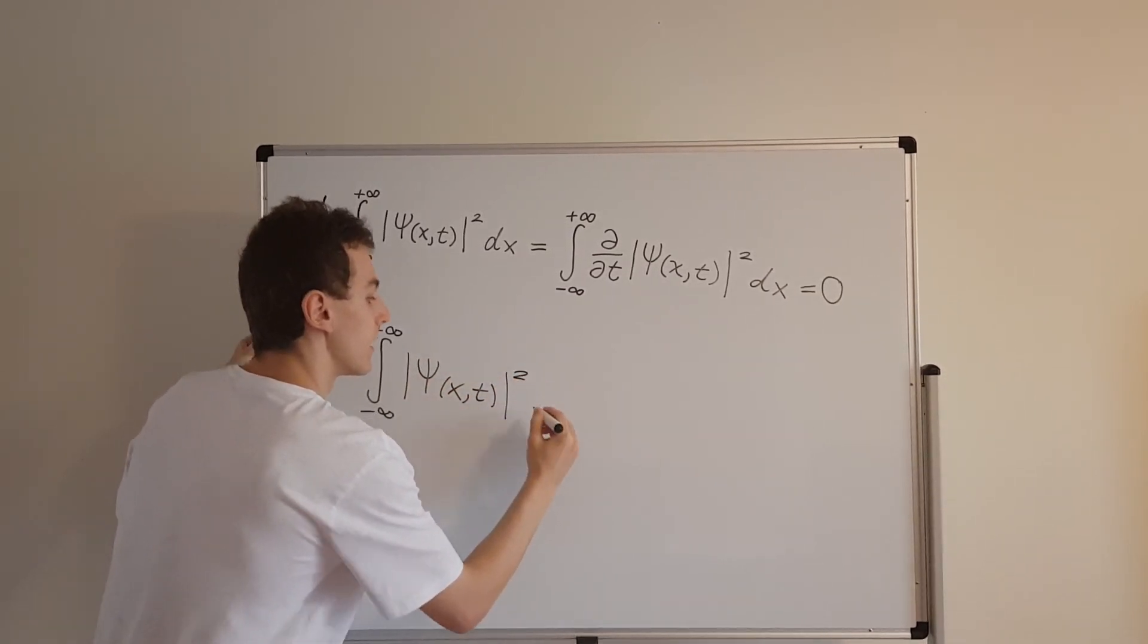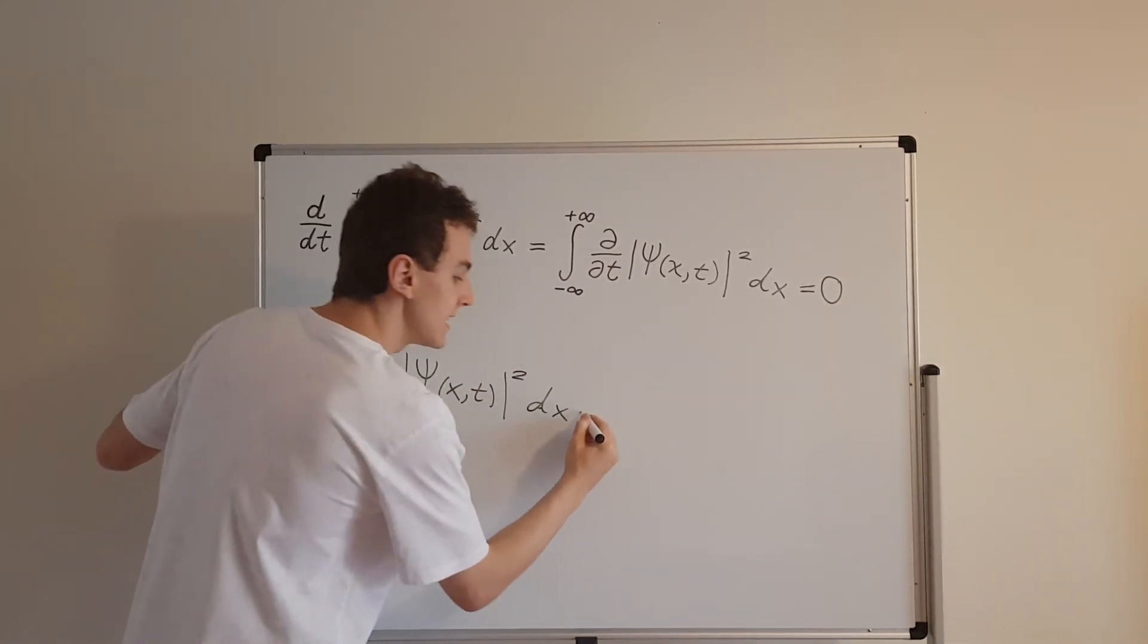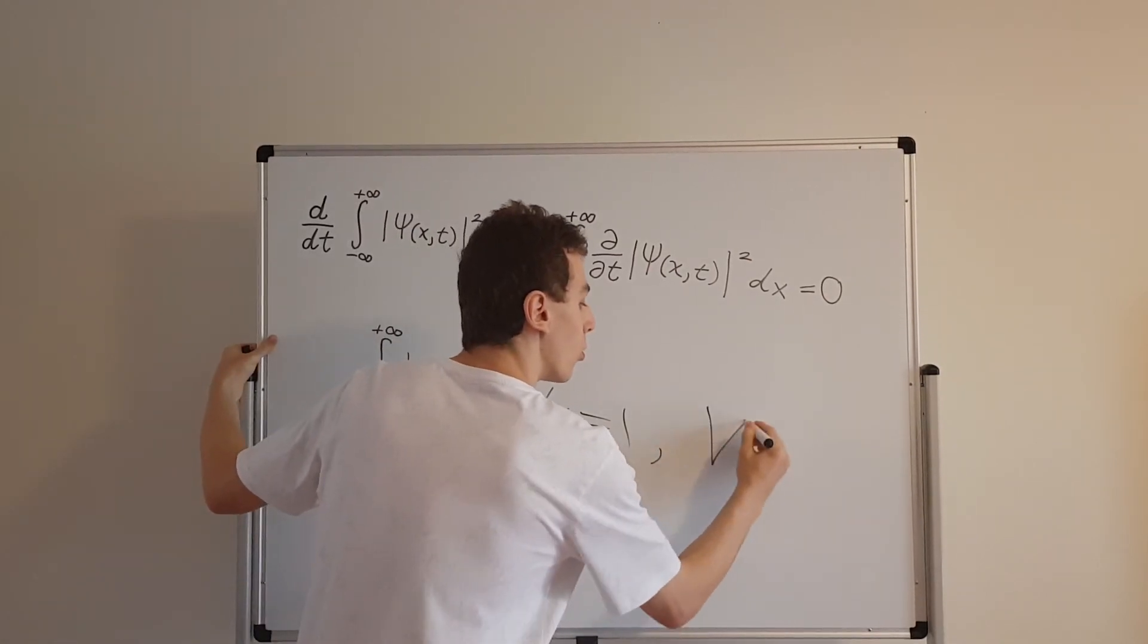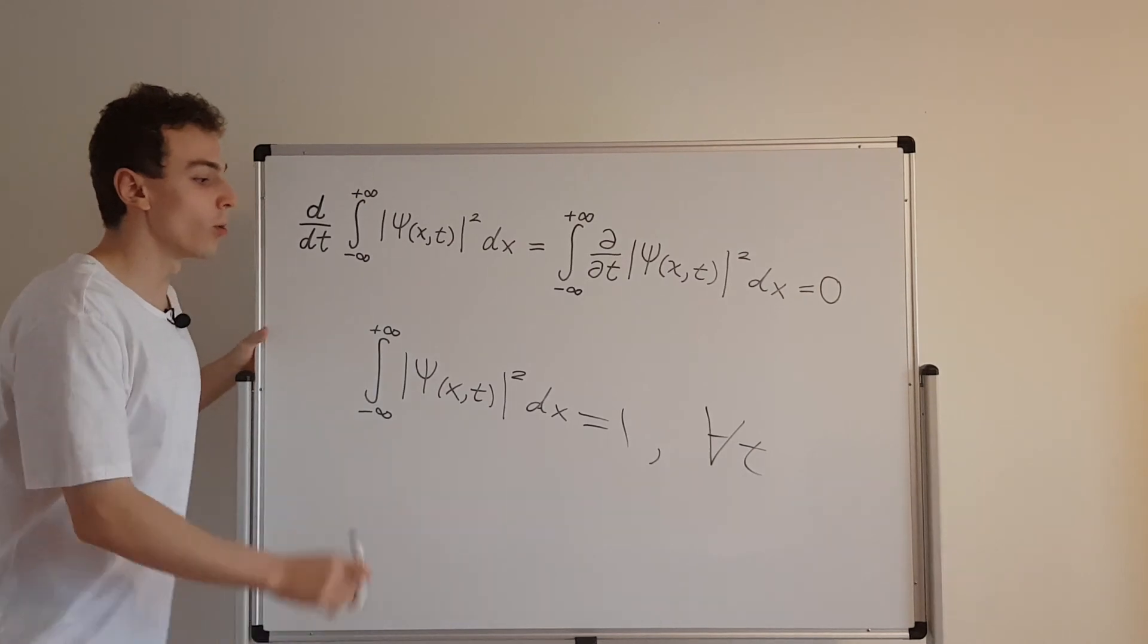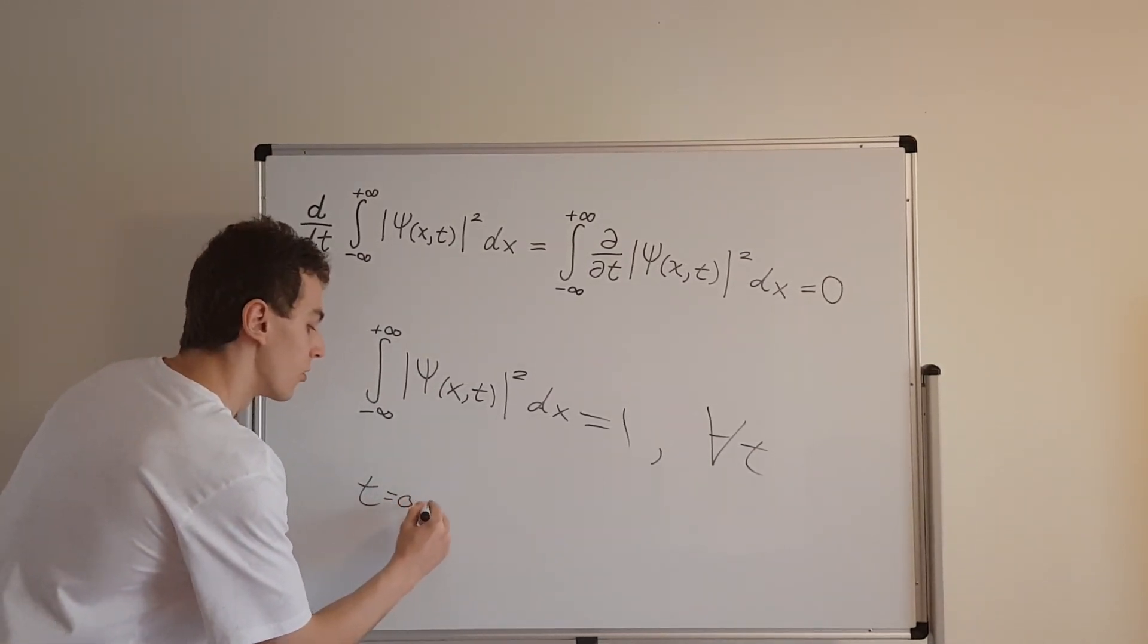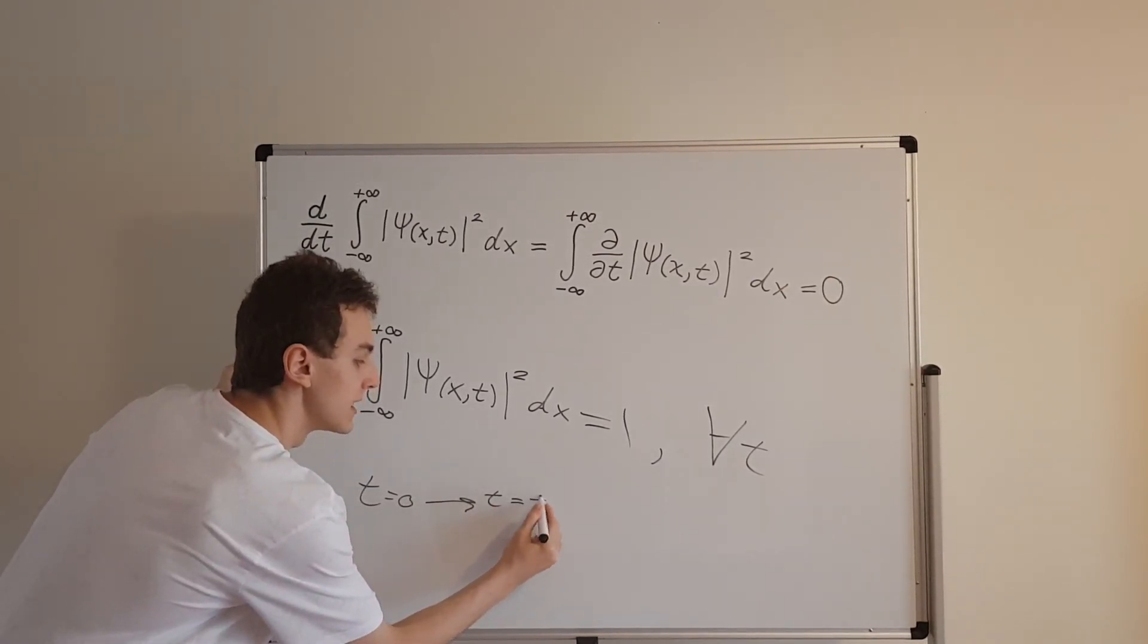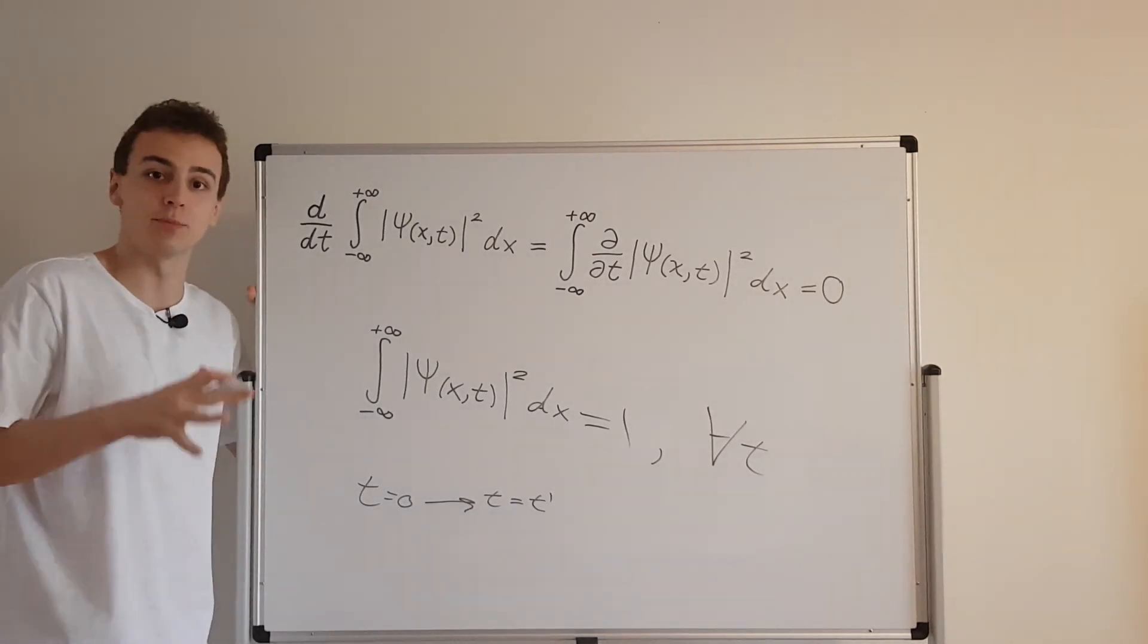So that allowed us to conclude that the integral from minus infinity to plus infinity of the probability density function dx, so this is the entire area under the curve, this is equal to 1, and it's equal to 1 for all time. This little symbol means for all, so for all t. So from t equals 0, all the way to any arbitrary time, t equals t prime, so the normalization of the wave function is preserved.